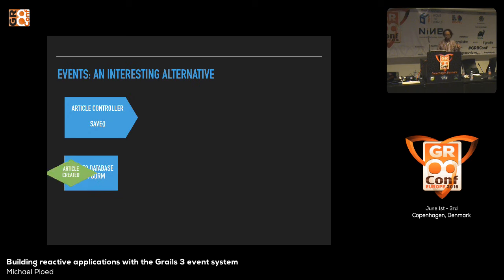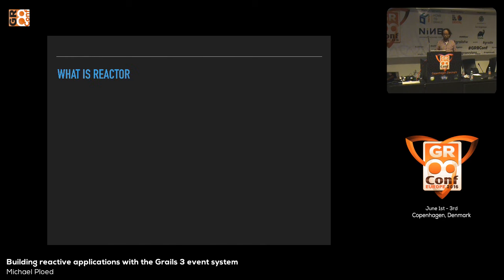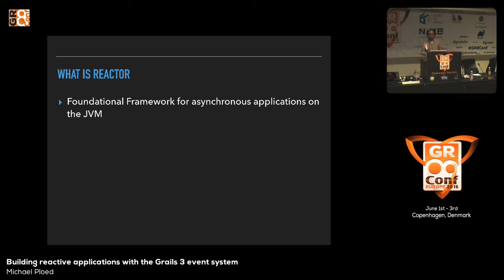The new feature in Grails 3 — the event system — allows us to do this inside a JVM, inside a running Grails application, without adding external infrastructure such as a messaging system. This new feature, called the Grails event system, is based on the project Reactor. Reactor is a foundational framework for asynchronous applications on the JVM — basically an abstraction for Java, Groovy, and other JVM languages.